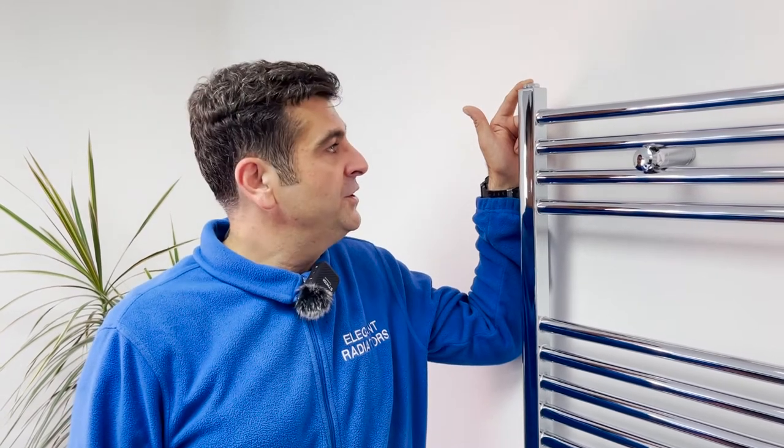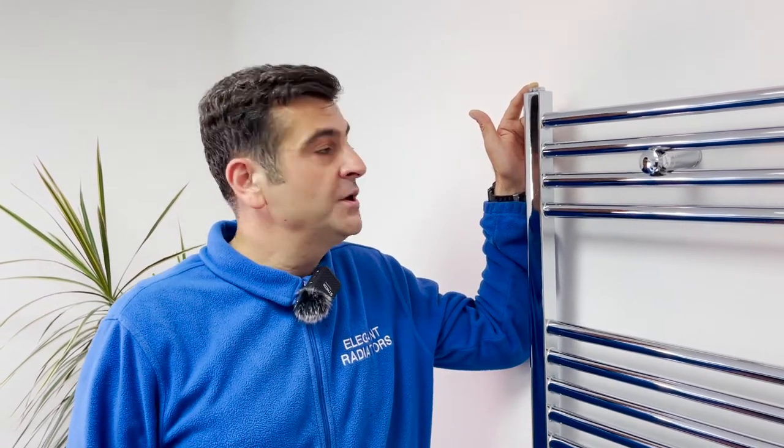To be able to do that, we have an air vent on the top of the towel rail. You will need a bleeding key or straight flat screwdriver, as well as a rag or tissue to collect some dirty water which may come out.